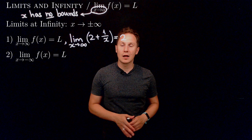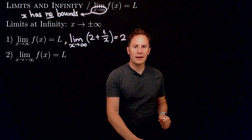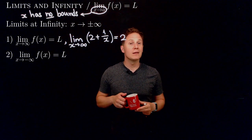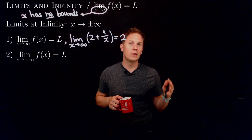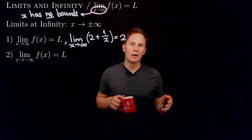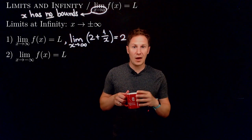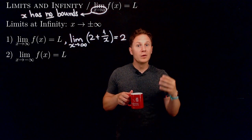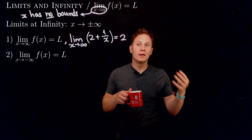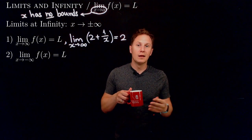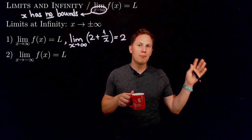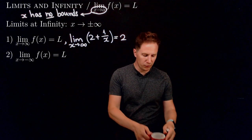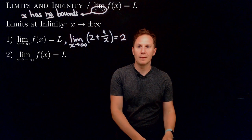Another example of a limit at infinity: take a hot drink and place it in a cooler environment. The temperature of that liquid at some time would have a limit at infinity equal to the ambient temperature — the outside temperature — as the liquid cools down over time.